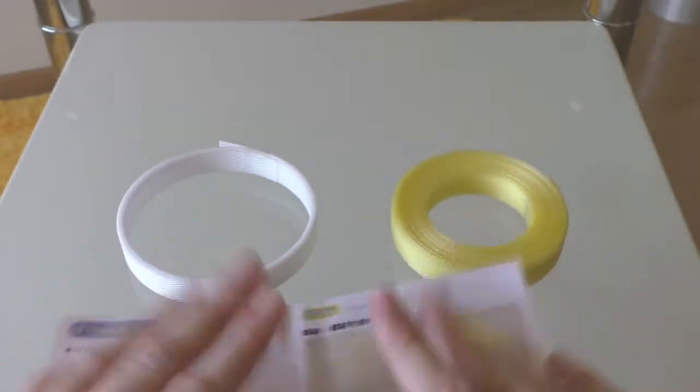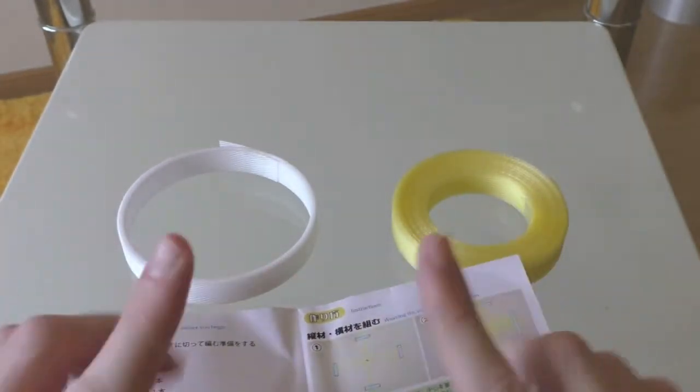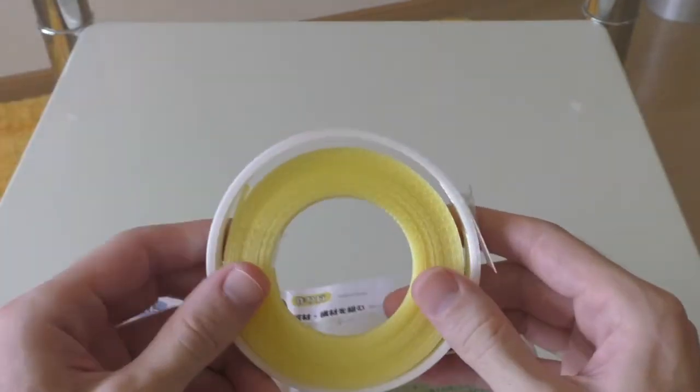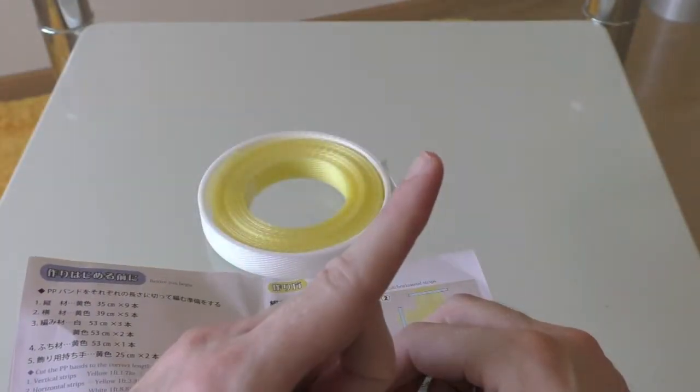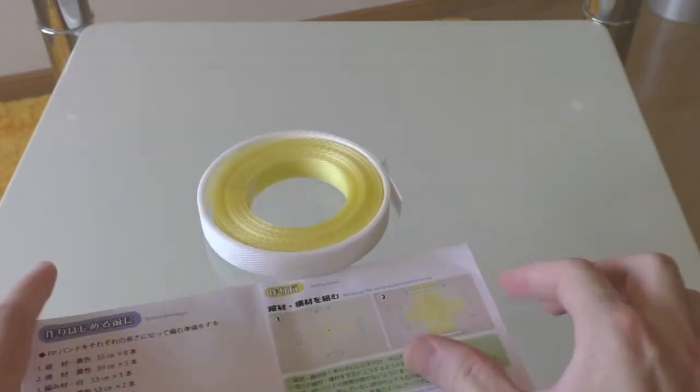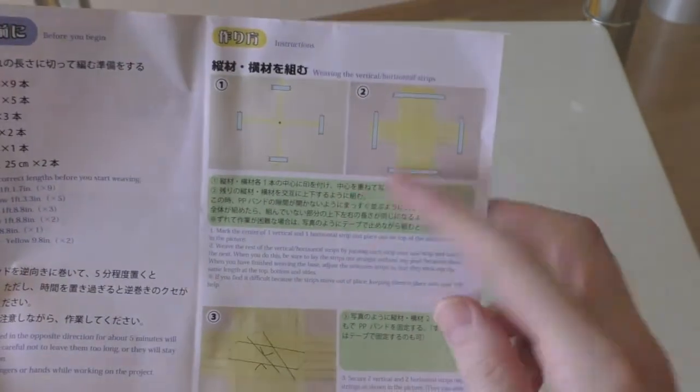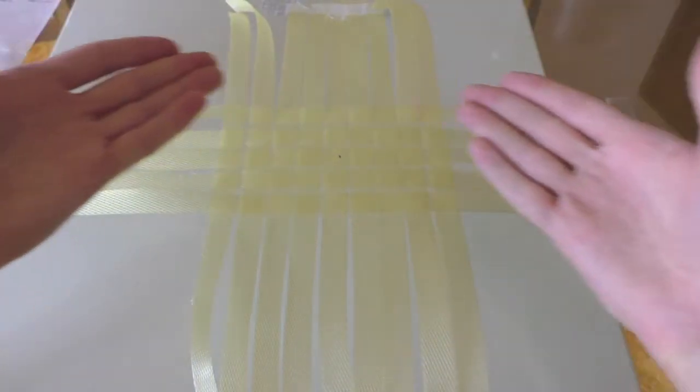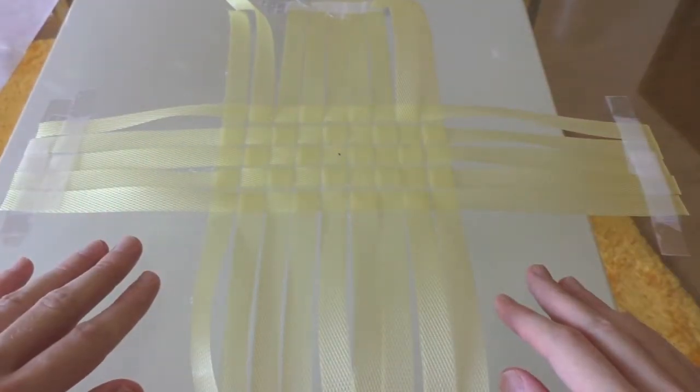Looking at the pictures, apparently the tape is for taping the bands to the table, and the pegs are used to hold the pieces on the corners, which makes sense. Now, I've never done this kind of weaving before, so it's going to be very interesting to see if I can actually achieve it. But at one star, I'm feeling positive.